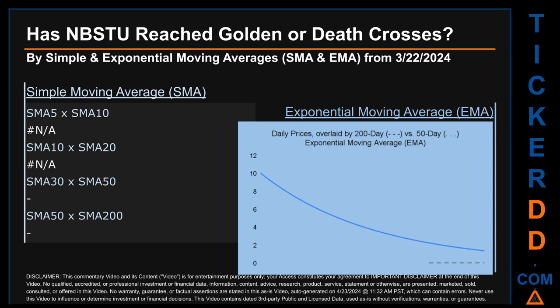The blue line is daily end-of-day prices. Continuing with SMA, we looked across the 5-to-10, the 10-to-20, and the 30-to-50 day ranges to see if golden and death crosses had been reached. We could not find either a golden cross or death cross signal for the 5-to-10, the 10-to-20, the 30-to-50, or the 50-to-200 ranges.